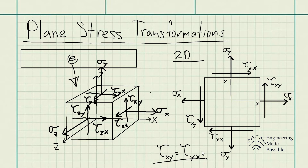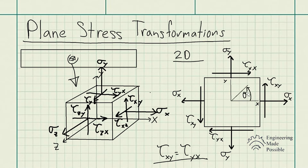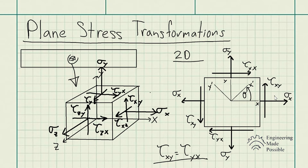Now we can explain what plane stress transformation is. Once we have this 2D element experiencing external loading, we can actually rotate the axis — instead of using the XY plane, we rotate it by some angle theta. Essentially, you're rotating this element — it's still a square, just rotated theta degrees — and projecting the normal stresses along X and Y, as well as the shear stresses, onto this new plane. Let's call this plane X prime and Y prime.